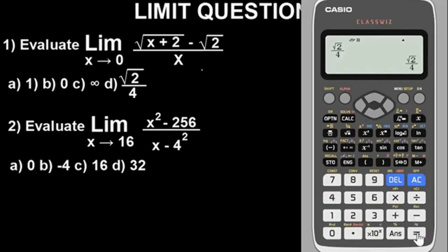Press equal. To convert this fraction to decimal, press SD. Exactly—this is the answer. This is what we got when we simplified. So the answer is option D.